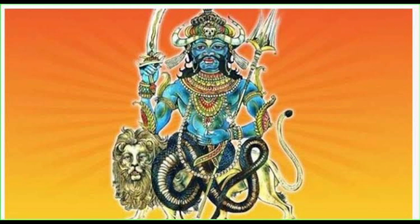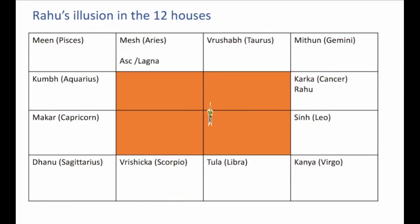On the other hand, Ketu represents the desire to move away from material things and indicates renunciation from material life. Ketu is also known as Moksha Karaka because he is the significator of Moksha, or liberation from the cycle of life and death. With this context in mind, let us now analyze the effect of placement of Rahu in each of the 12 houses in the zodiac belt.